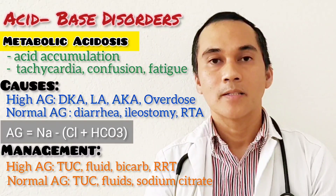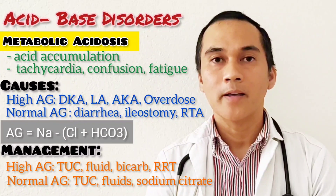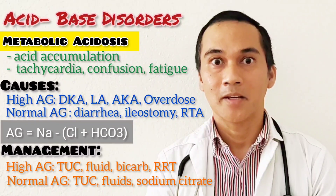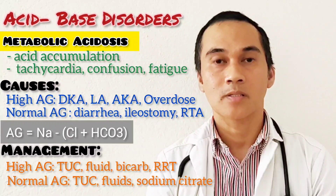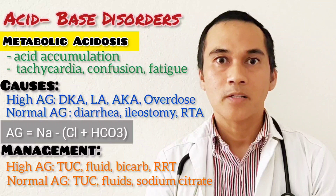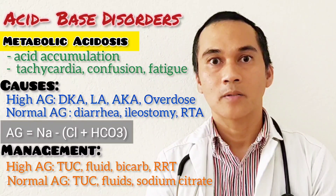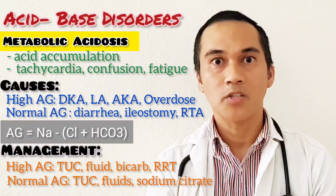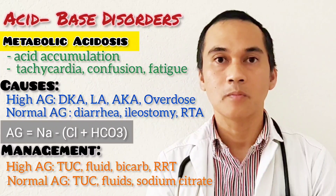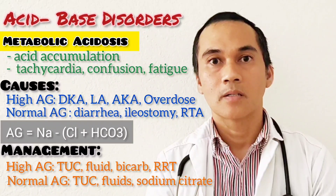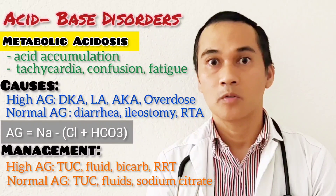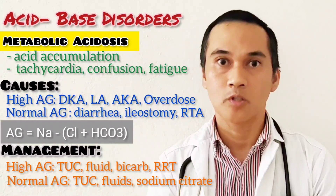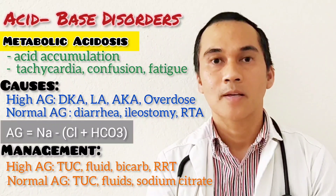For the normal anion gap metabolic acidosis, this is caused by diarrhea, ileostomy, and renal tubular acidosis. Just to refresh our memory about anion gap: AG = sodium minus the sum of bicarbonate and chloride. Sometimes potassium is included: (sodium + potassium) minus the sum of chloride and bicarbonate.